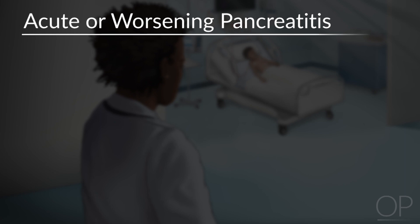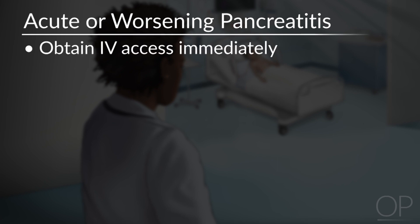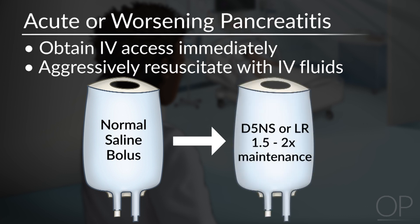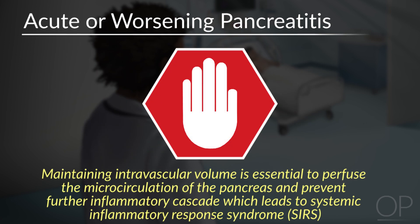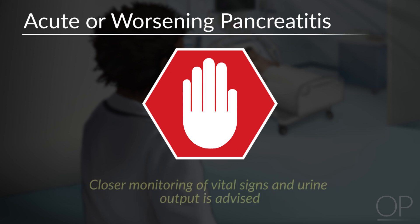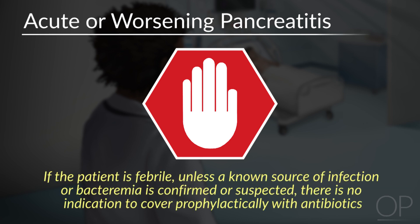If your initial evaluation is consistent with acute pancreatitis, or the patient held a diagnosis of pancreatitis and appears to be worsening, it is important to obtain IV access immediately and aggressively resuscitate with IV fluids. Typically, a normal saline bolus should be given first, followed by crystalloid IV fluids such as D5NS or LR at 1.5 to 2 times maintenance. Maintaining intravascular volume is essential in perfusion of the microcirculation of the pancreas. Given their inflamed state, patients are at risk for third spacing and spilling fluid into the abdomen, lungs, and extravascular spaces quickly. If patients are fluid-sensitive, ensuring optimal fluid resuscitation remains a priority; however, closer monitoring of vital signs for ensuing SIRS physiology and urine output is advised. If the patient is febrile, unless a known source of infection or bacteremia is confirmed, there is no indication to cover prophylactically with antibiotics.